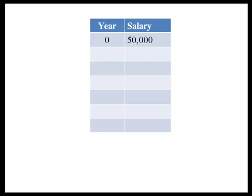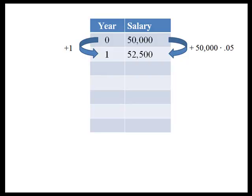So in the salary problem, let's go ahead and assume that for the first year we're making $50,000. When we find the formula, we'll be able to replace that with M. So in year zero we're making $50,000. After one year, we get 5% of that $50,000 added to that $50,000, which gives us a total of $52,500.